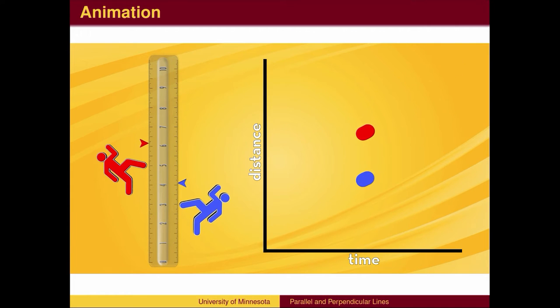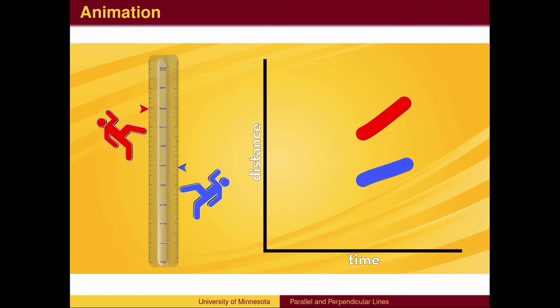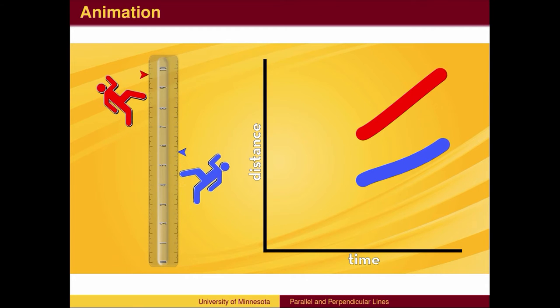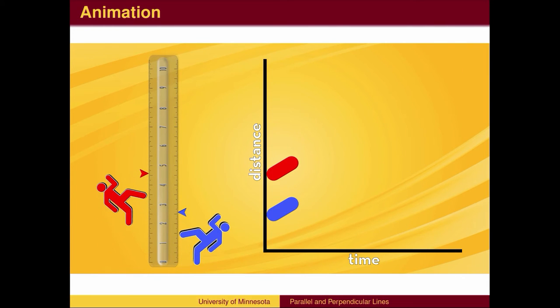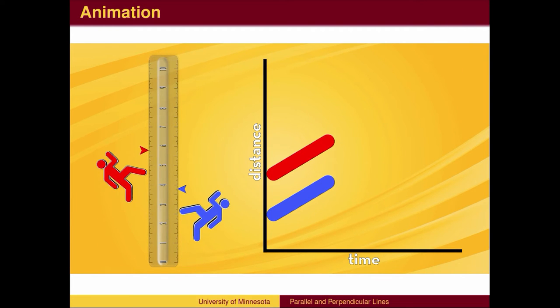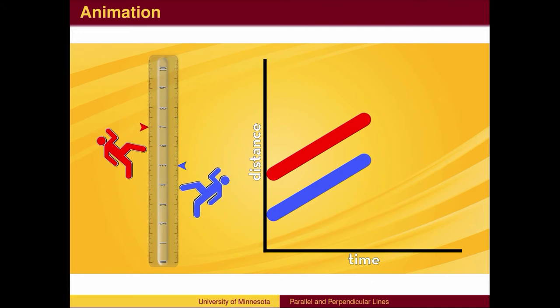Similarly, if the speed of the blue competitor is slower than the red competitor, then at some point in the past the two were at the same location and red moved ahead. The only way the two competitors will never meet is if they run at the same speed.